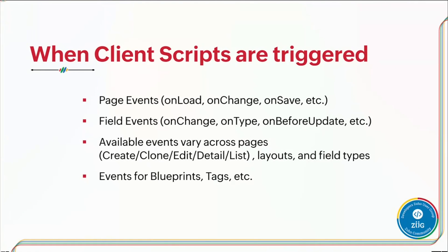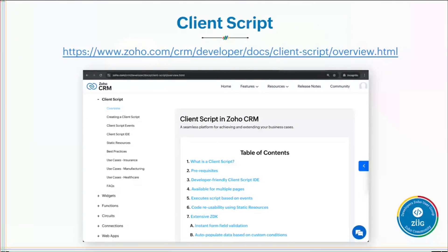Client scripts can be triggered on different pages within CRM. Each page has an event which can be used to trigger client scripts. Modules, fields, and different pages have different events. Different layouts are used for different modules, so you can customize your use case based on page events, field events, and which layout you want it to run in. If you're using blueprints, tags, wizards, or canvas — wherever you want — you can use client scripts. The full documentation is available online.